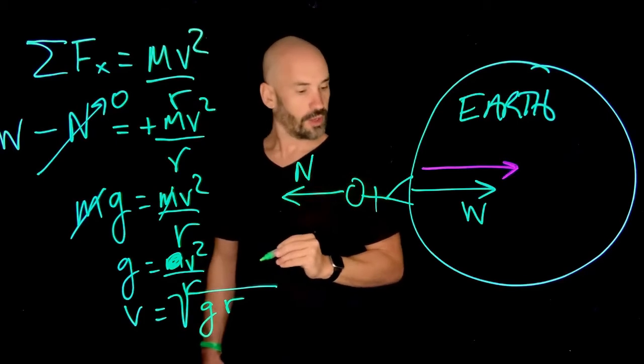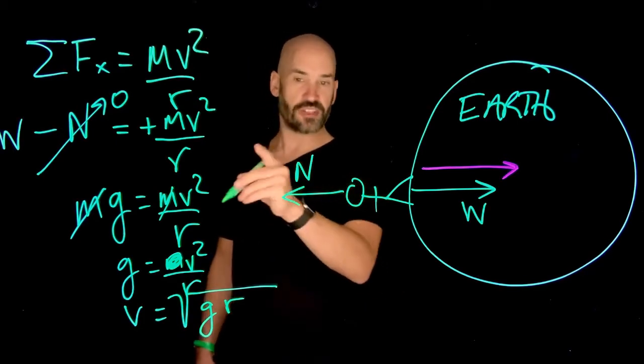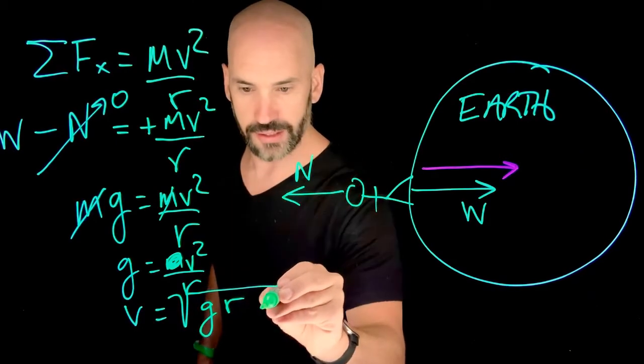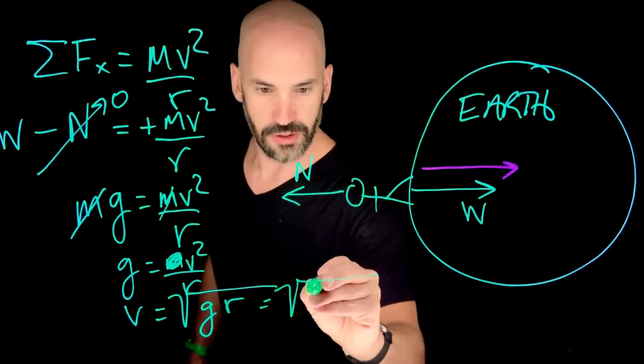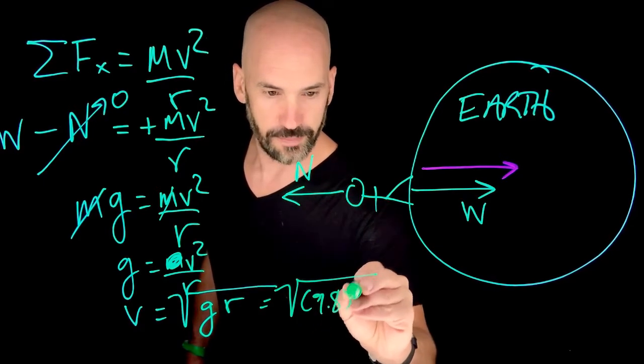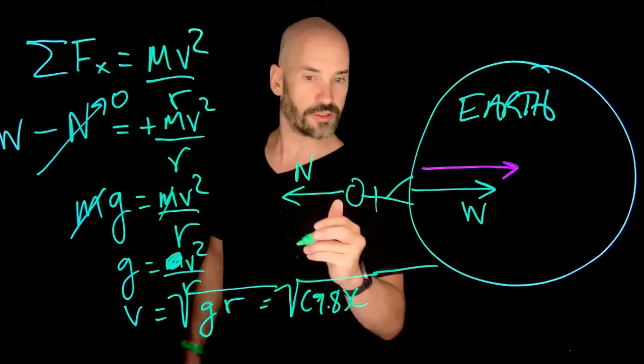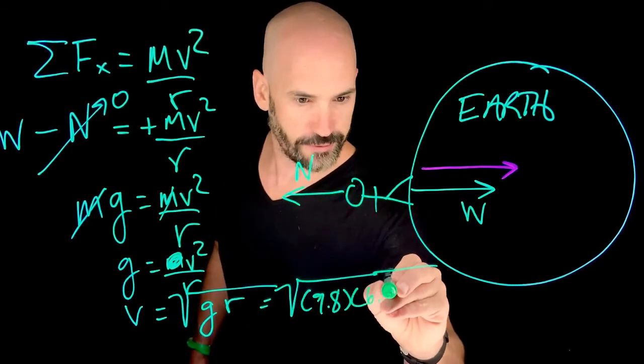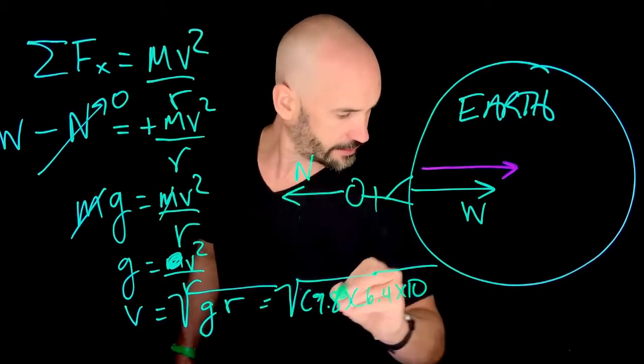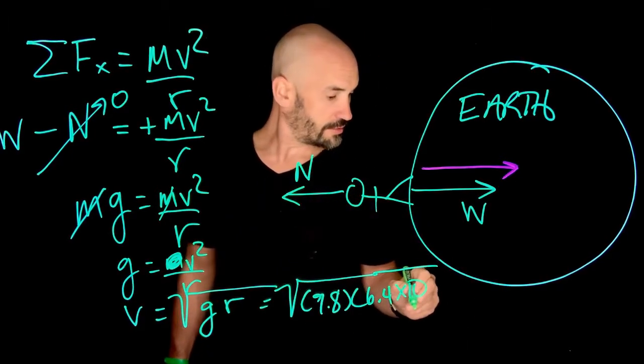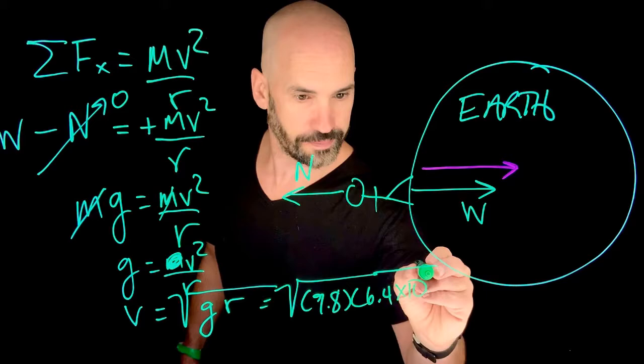So, well, what speed is that such that that happens? Well, I go ahead and put in my g, which is 9.8 meters per second squared. And my r, in other words, my radius of the earth, last time I checked was about 6.4 times 10 to the 6 power meters.